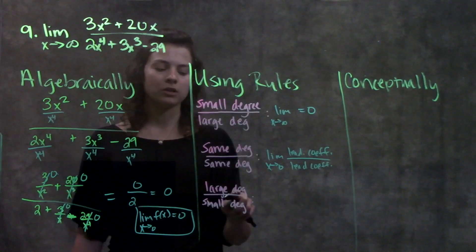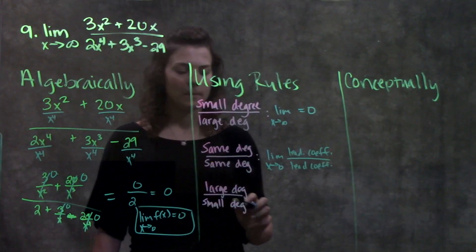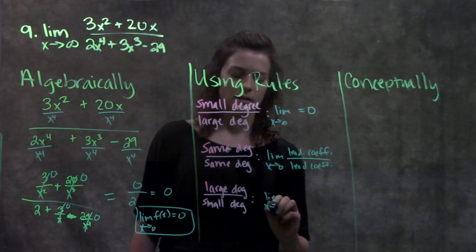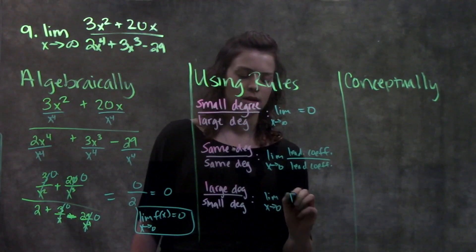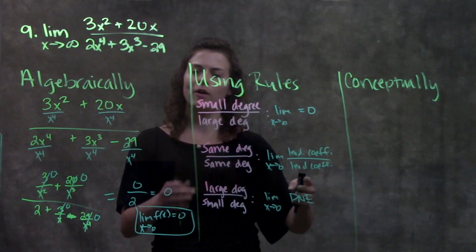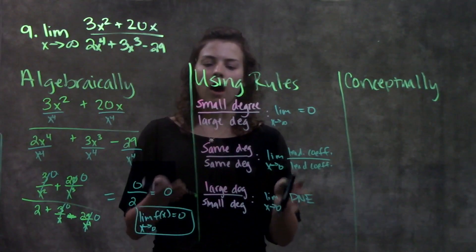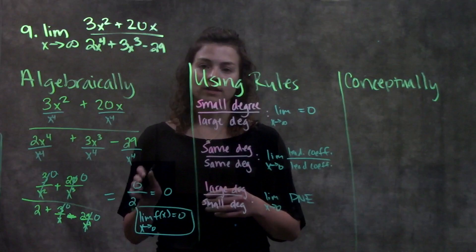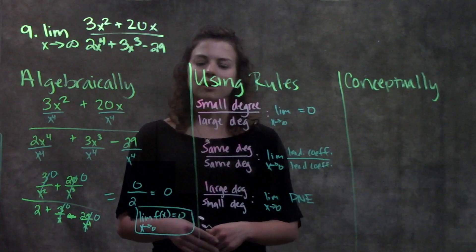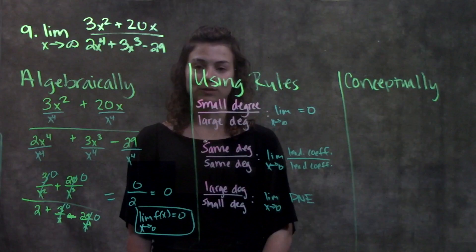And the last rule is if your larger degree is in the numerator and your smaller degree is in the denominator, this means it's approaching infinity or the limit does not exist. And again, we're going to go through conceptually why all these rules make sense. But also, just so you know, all these rules and this method that we're solving these problems, it's the same thing for when you're solving for horizontal asymptotes later in this section. So everything we're using here for limits, you can apply to the asymptote problems as well.